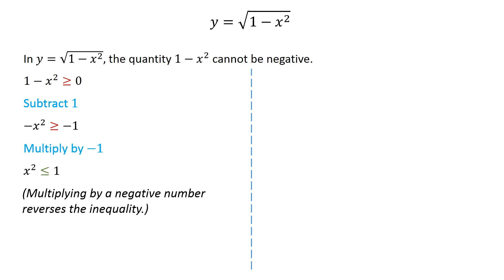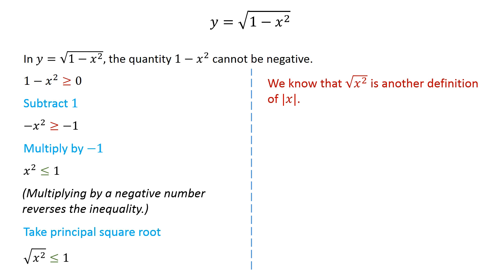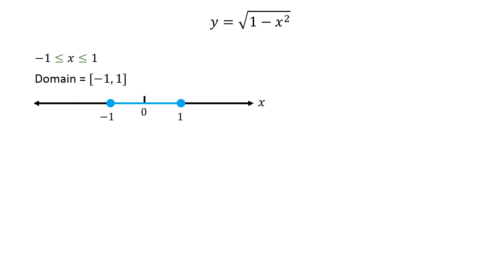Since all the values in this inequality are non-negative, we can take the principal square root. Doing so, we get the principal square root of x squared is less than or equal to 1. We know that the principal square root of x squared is another definition of modulus of x. So we can write this inequality as modulus of x is less than or equal to 1, which implies that x is greater than or equal to negative 1 and less than or equal to 1. Therefore, the domain of this function is the closed interval from negative 1 to 1.